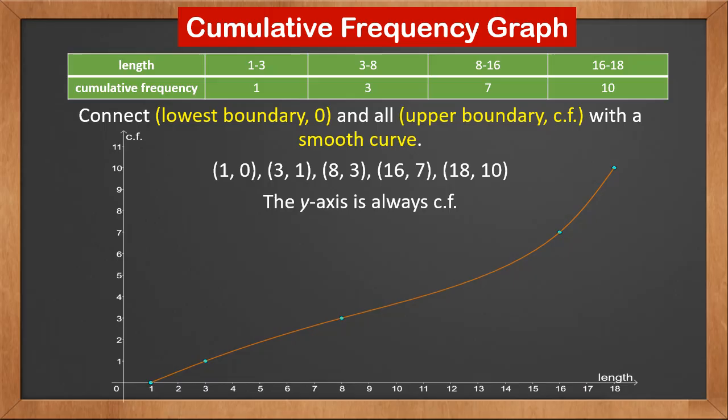What does this graph tell us? Look at the first point. We can see that there's no value less than 1. And look at the third point (8, 3). If we draw 2 lines from the point to touch the x and y axis, we can see that there are 3 values less than 8.